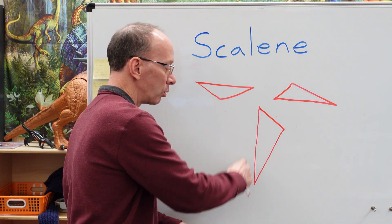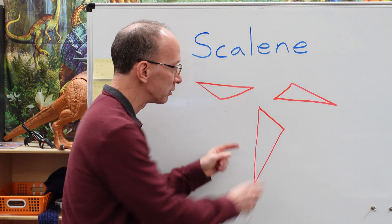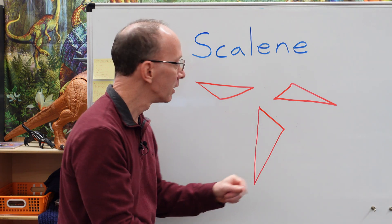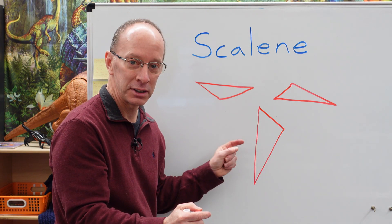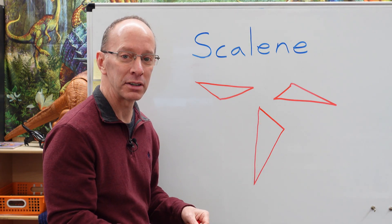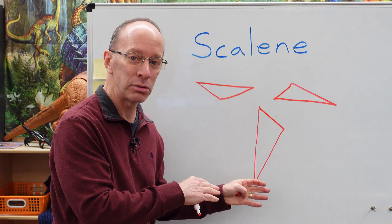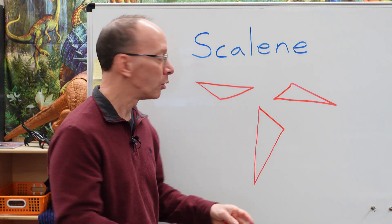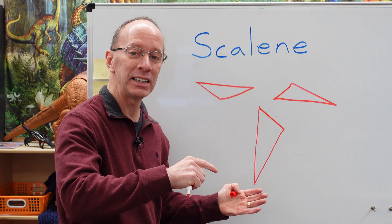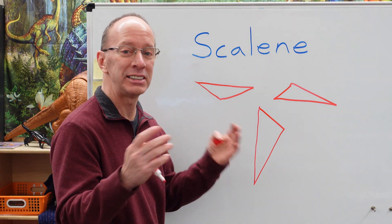It is a closed shape, all right? There's no openings at all. Each side is different. Each angle is different. So a scalene triangle is a shape, a closed shape with three sides with line segments where the sides and the angles are different.